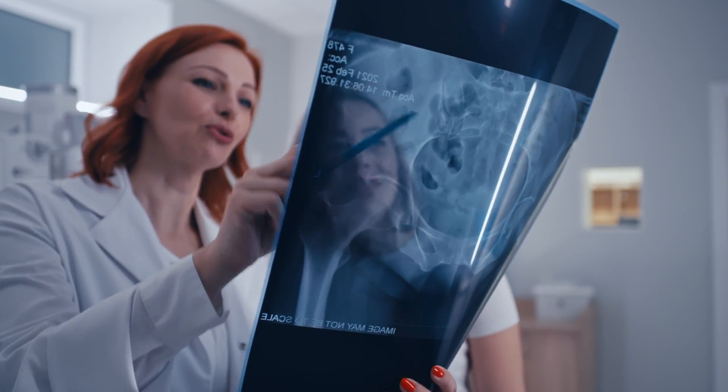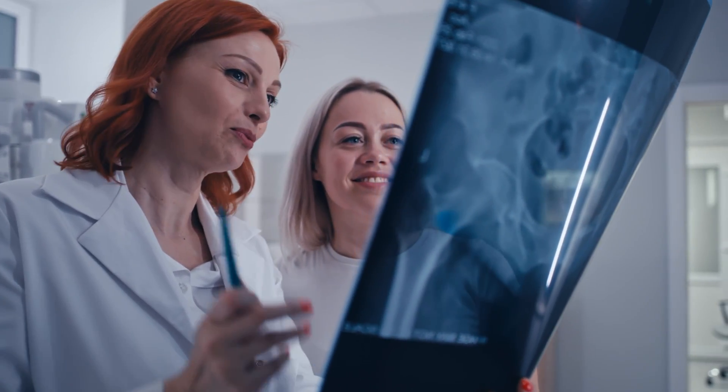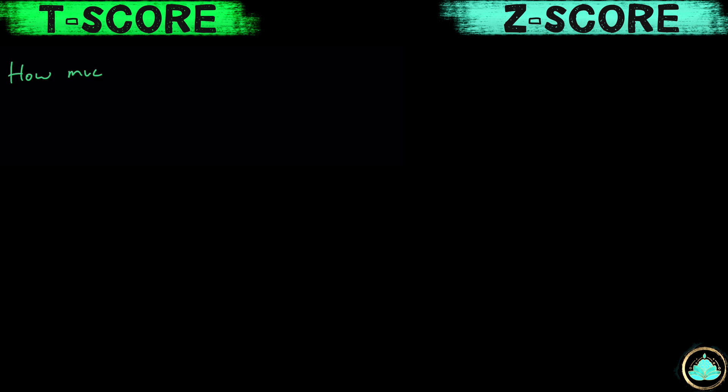So once you get the scan and after it's completed, you'll go back to the doctor's office while they report and go over some numbers with you. The number they will definitely be talking to you about is your overall T-score, and they may mention something called a Z-score. A T-score is how much your bone mass differs from the bone mass of an average healthy 30-year-old adult.